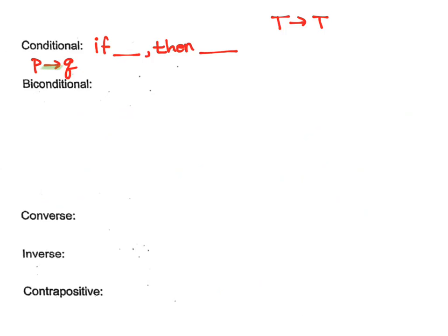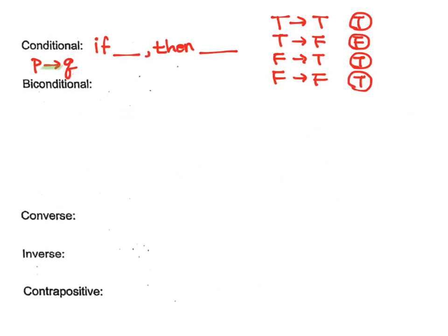True implies true is true. True implies false — this is the only case that's false. False implies true is also true, and false implies false is still true. Notice that the only case that is false is true implies false. You can consider this one as like a broken promise.